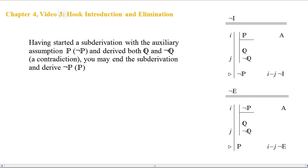Let's take a look at these two rules. On top, on the right-hand side, we have hook introduction. What this rule form is telling us is that if we start a subderivation with an auxiliary assumption of P, then with perhaps some work we can derive Q and its direct syntactic negation, not Q.